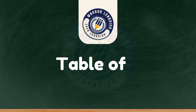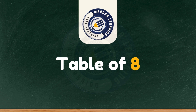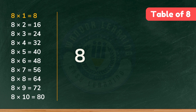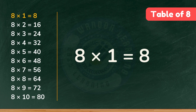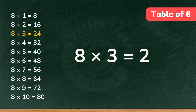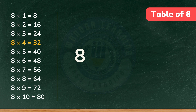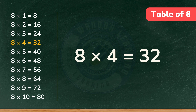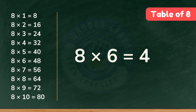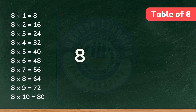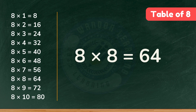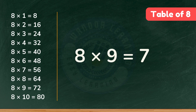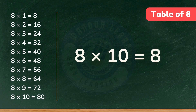Great. Now let's repeat it one more time to make sure we remember. Eight times one is eight. Eight times two is sixteen. Eight times three is twenty-four. Eight times four is thirty-two. Eight times five is forty. Eight times six is forty-eight. Eight times seven is fifty-six. Eight times eight is sixty-four. Eight times nine is seventy-two. Eight times ten is eighty.